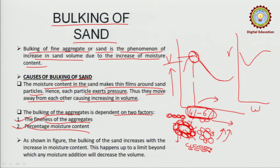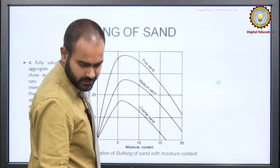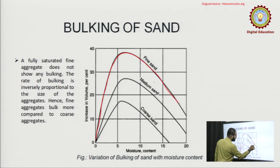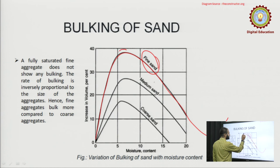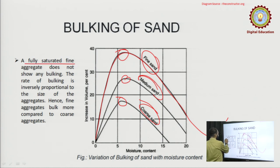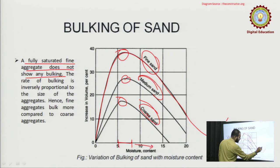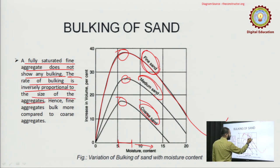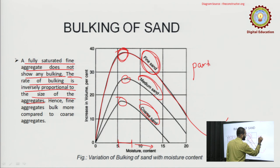The bulking of aggregate is dependent on two factors: the fineness of the aggregate and the percentage of moisture content. Once you increase the water content beyond the 4–6% range, the surface tension gets broken and the particles get dispersed again — the volume decreases drastically. So this phenomenon is only seen in that range; after that, the volume decreases. As shown in the diagram, the higher the fineness, the higher the bulking. For medium sand, it is lesser, and for coarse sand, lesser still. The rate of bulking is inversely proportional to the size of the aggregate — fine aggregates bulk more than coarse aggregates.